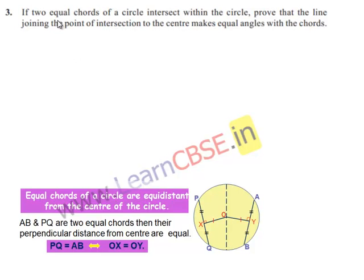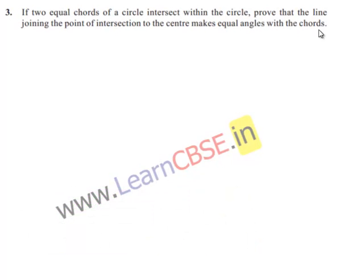Moving on to question number three: if two equal chords of a circle intersect within the circle, prove that the line joining point of intersection to the center makes equal angles with the chords.